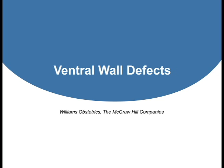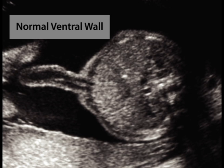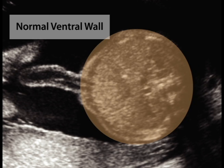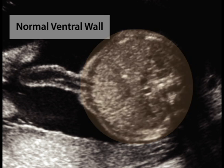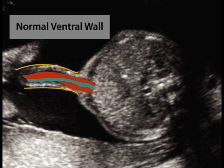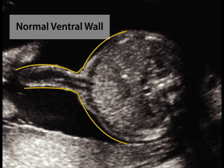Ventral wall defects. During standard obstetrical ultrasound examination, a transverse image through the fetal abdomen is obtained to inspect umbilical cord insertion into the anterior abdominal wall. Integrity of the ventral wall is also demonstrated in this view.